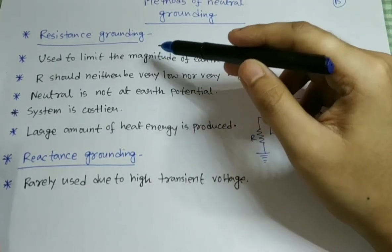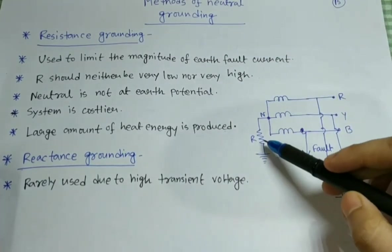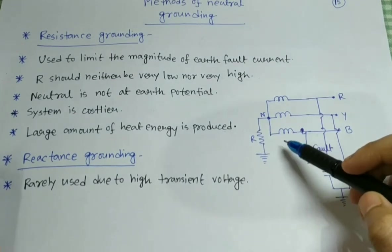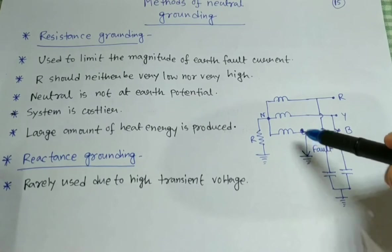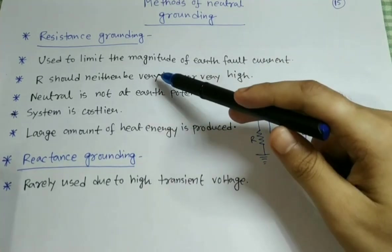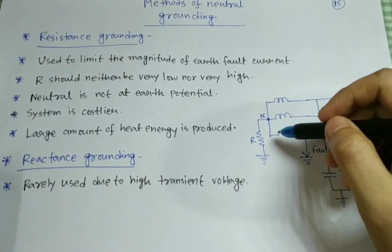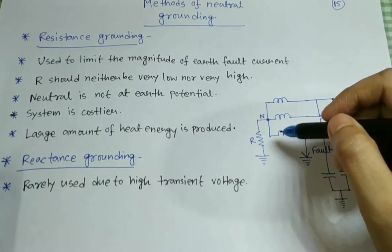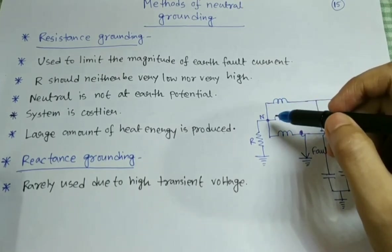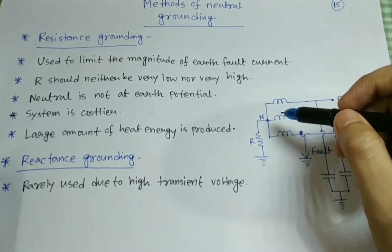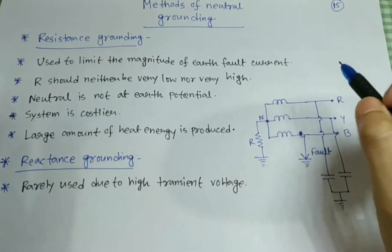In resistance grounding, it is used to limit the magnitude of earth fault current. Between the neutral and the ground, one resistor is connected — unlike solid grounding where there was no such arrangement. The value of resistance should be neither very low nor very high. If it is very low, it will be similar to the solidly grounded case and the fault current will be very large. But if it is very high, it will behave as an ungrounded neutral system, and there is a chance of arcing ground with all the associated disadvantages.